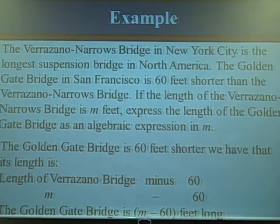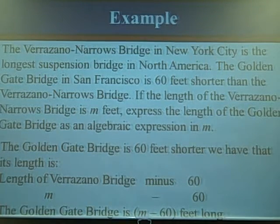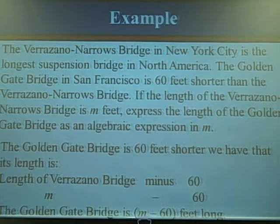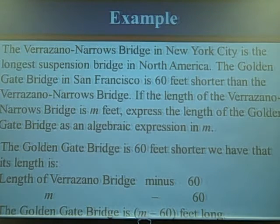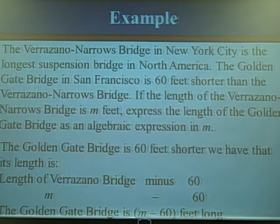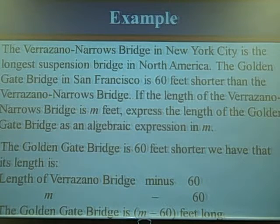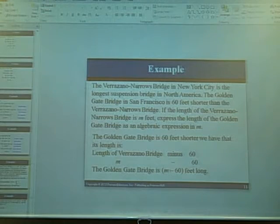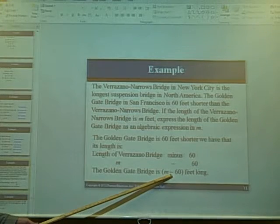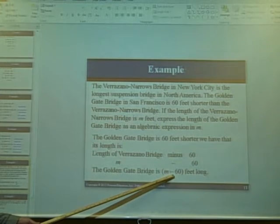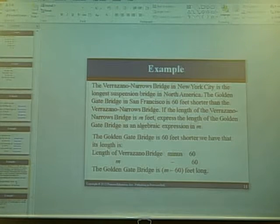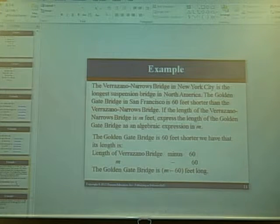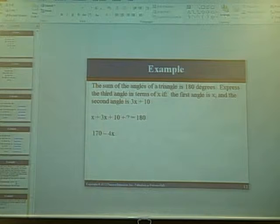M minus 60? M minus 60, right. Because it's 60 feet shorter, so we're going to be subtracting 60. And so your answer here is m minus 60. Golden Gate Bridge. So that's how you would express that problem algebraically. Questions with that?